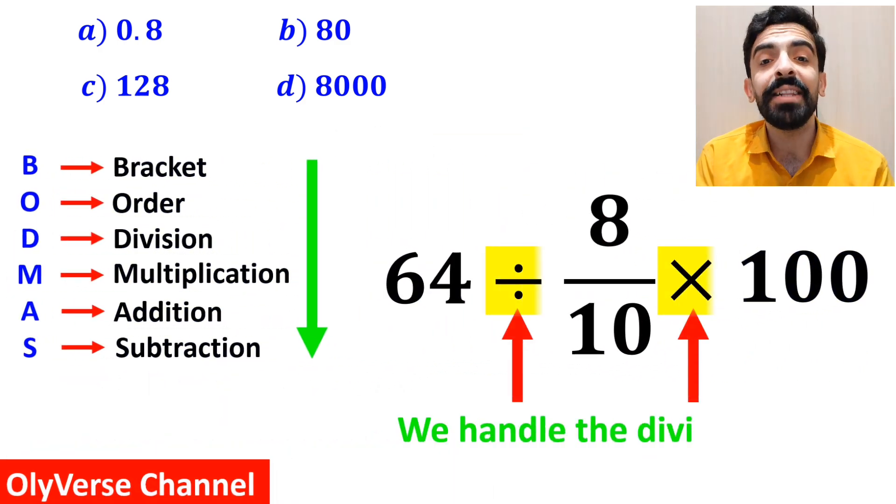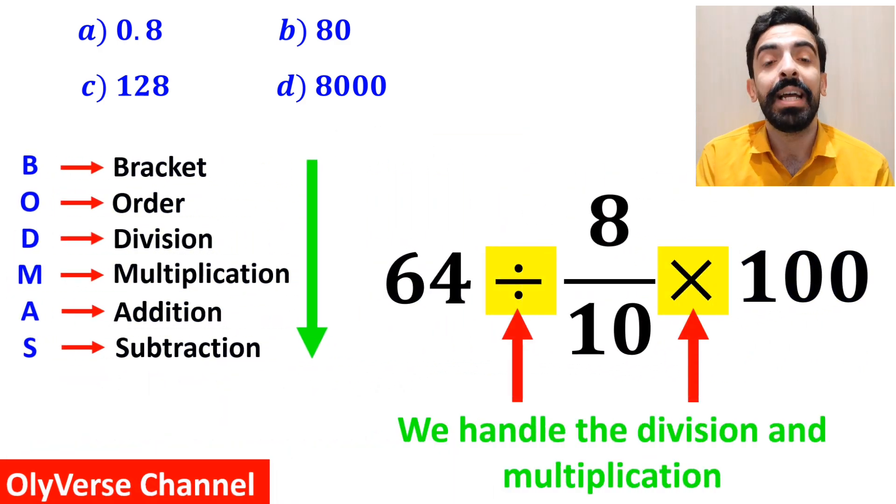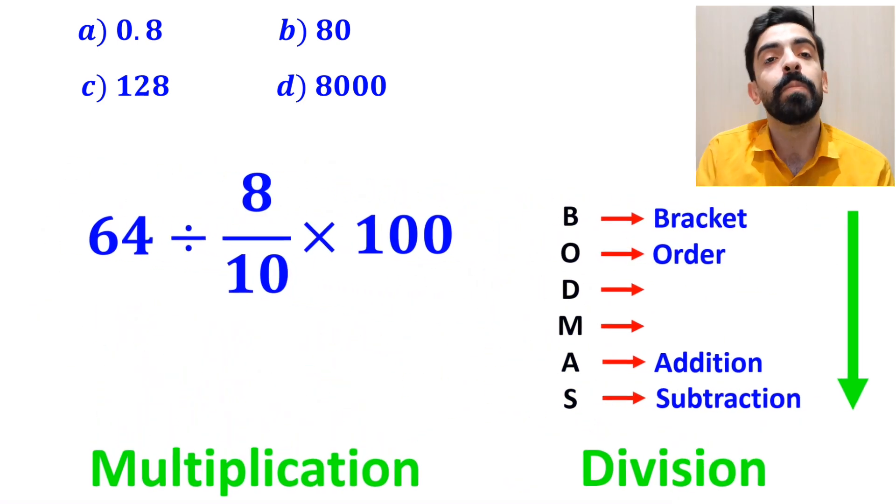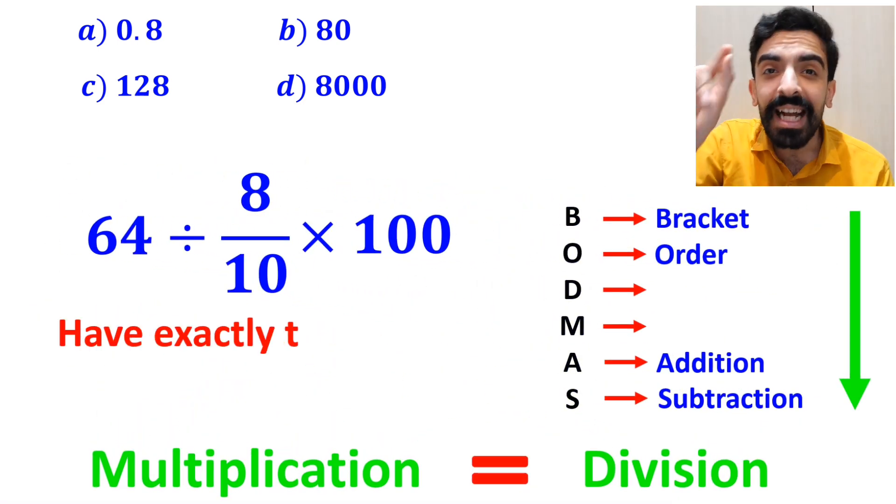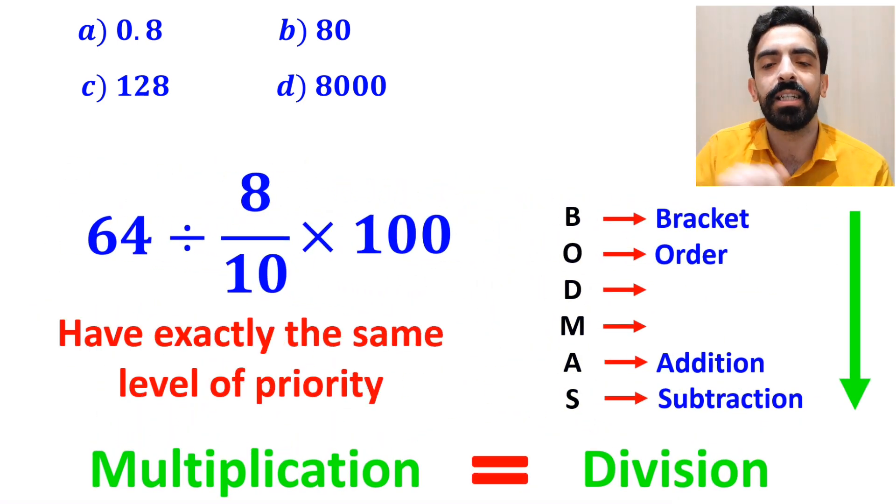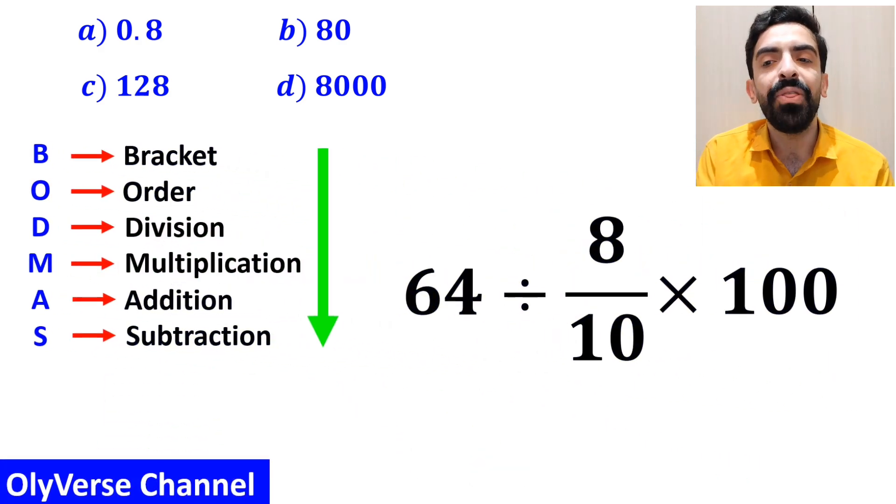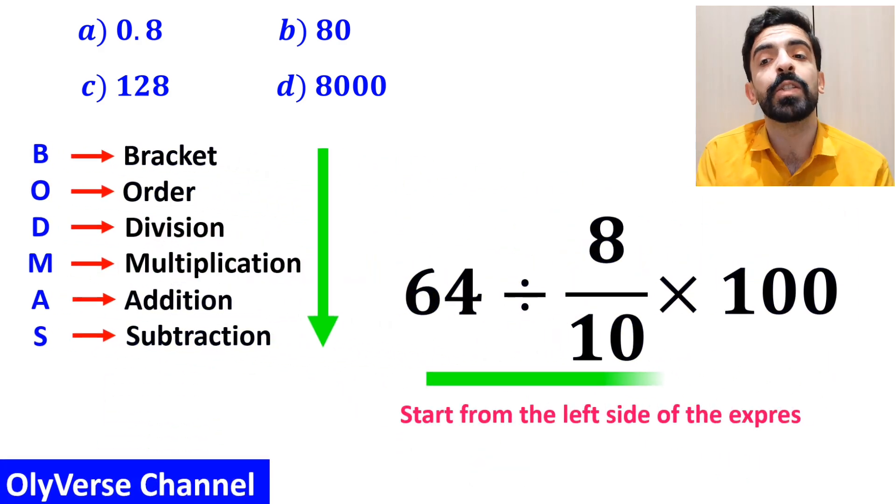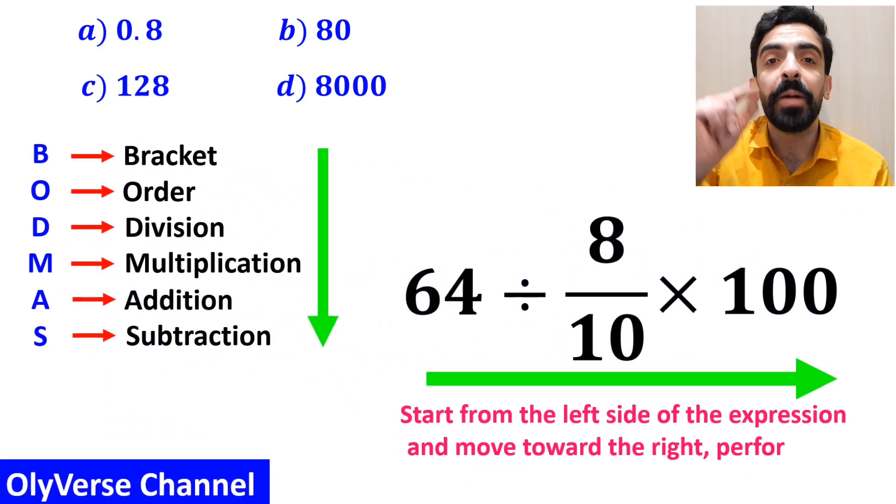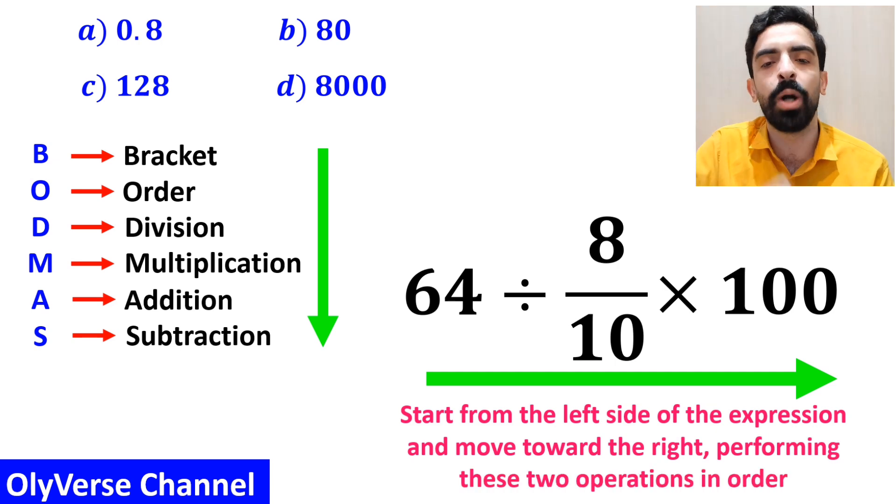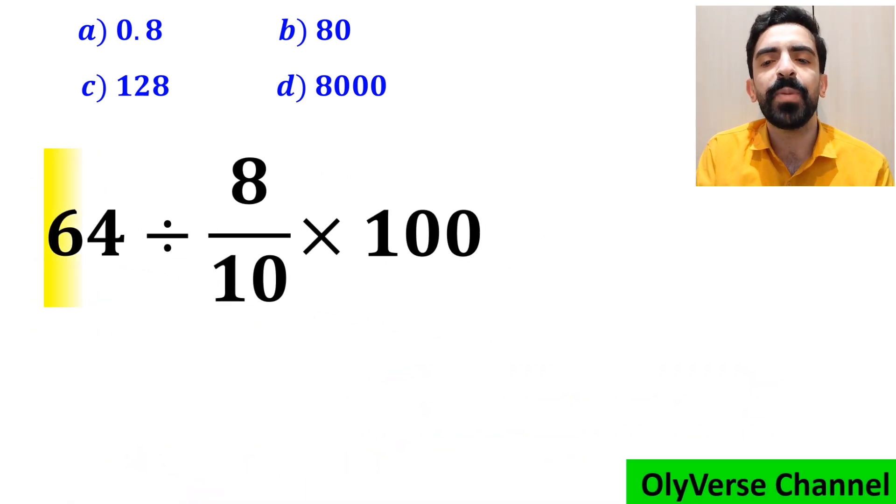In the next step, we handle the division and multiplication. However, it's very important to note that in the BODMAS rule, multiplication and division have exactly the same level of priority. In this situation, the best thing to do is to start from the left side of the expression and move toward the right, performing these two operations in order. So first we perform the division between 64 and 8 over 10.